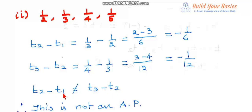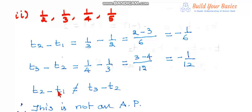If t2 minus t1 were equal to t3 minus t2, then we would find the next differences t3 minus t2 and t4 minus t3. But here t2 minus t1 itself is not equal to t3 minus t2, so this is not an AP.